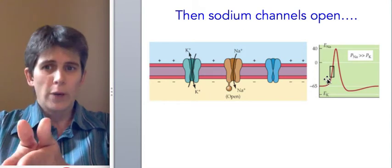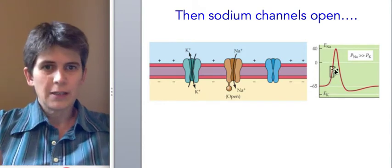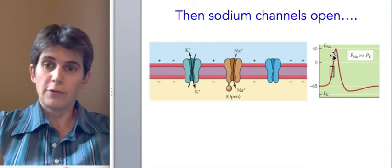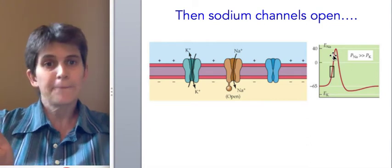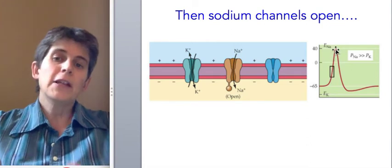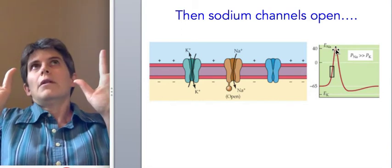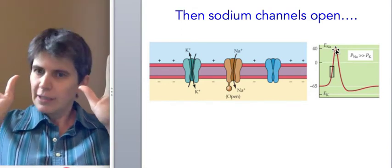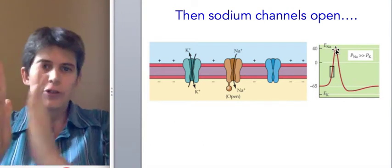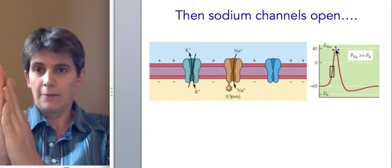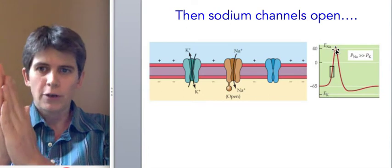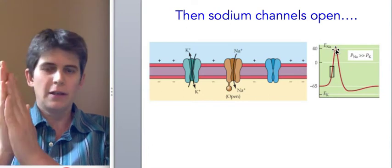Sodium comes in and in. Now, at some point, so much comes in that the cell becomes positively charged from all this sodium movement. As the sodium comes in and makes the inside of the cell more positively charged, sodium is less drawn into the cell. That is, its concentration gradient is still drawing it in. The action potential has no functional impact on the concentration gradient, like spitting in the ocean. This is a permanent state of the cell, these concentration gradients.